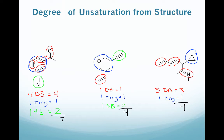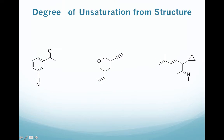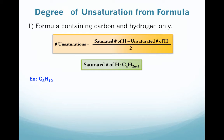That's how we look at a structure and figure out the number of unsaturations. Next, we're going to look at how we can use a molecular formula and calculate the number of unsaturations — this is what becomes most useful when trying to figure out organic structures. We'll follow this general equation: the number of unsaturations equals the saturated number of hydrogens minus the unsaturated number of hydrogens, divided by 2. The saturated number of hydrogens comes from the alkane formula CnH2n+2.